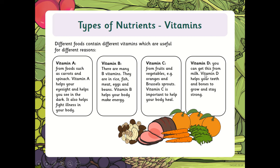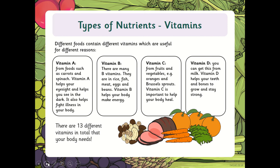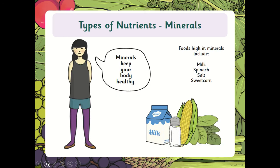Vitamin D you can get from milk. Vitamin D helps your teeth and bones to grow and stay strong. You can also get Vitamin D from sunlight, which wasn't up there on the list. There are 13 different vitamins in total that your body needs — these were just four of them, although there are many different types of B vitamin, like B6 and B12.